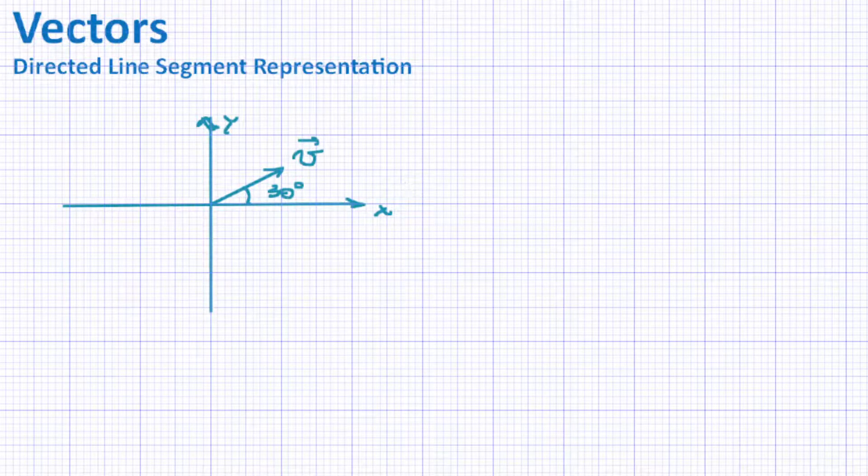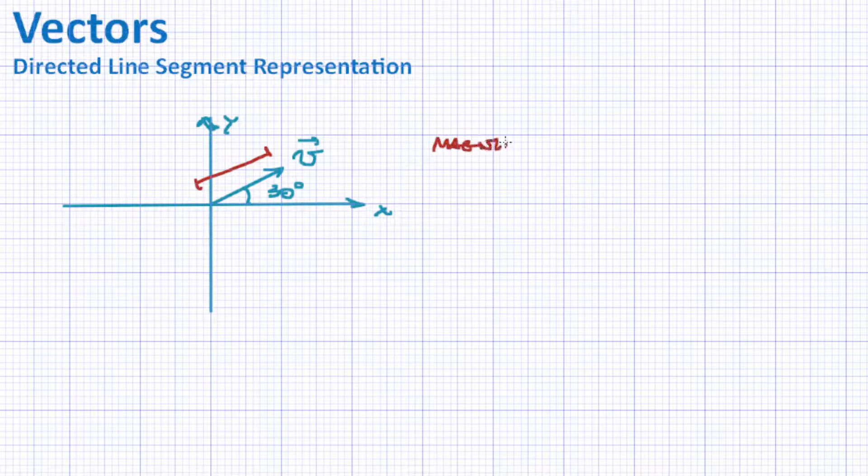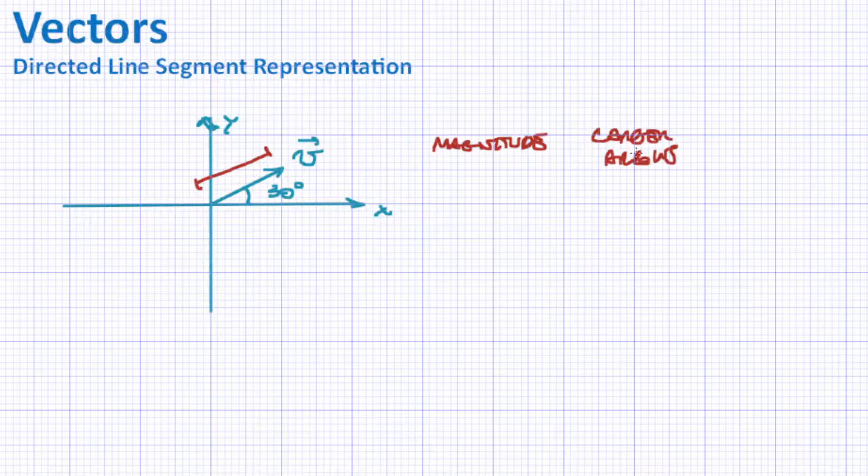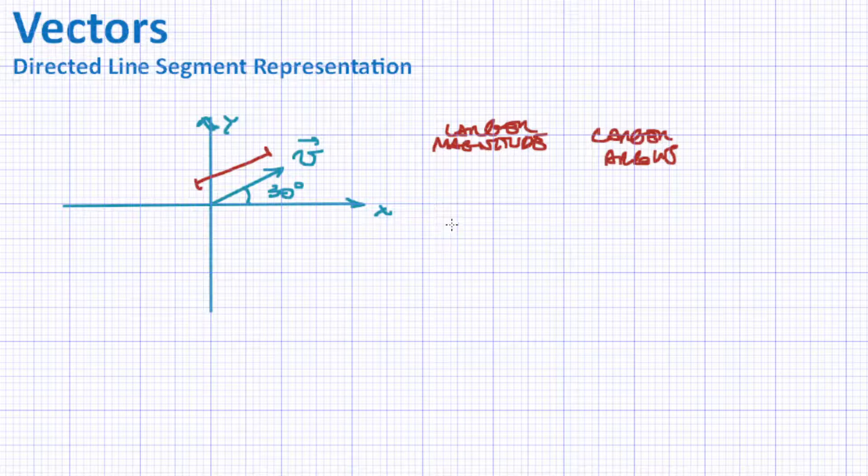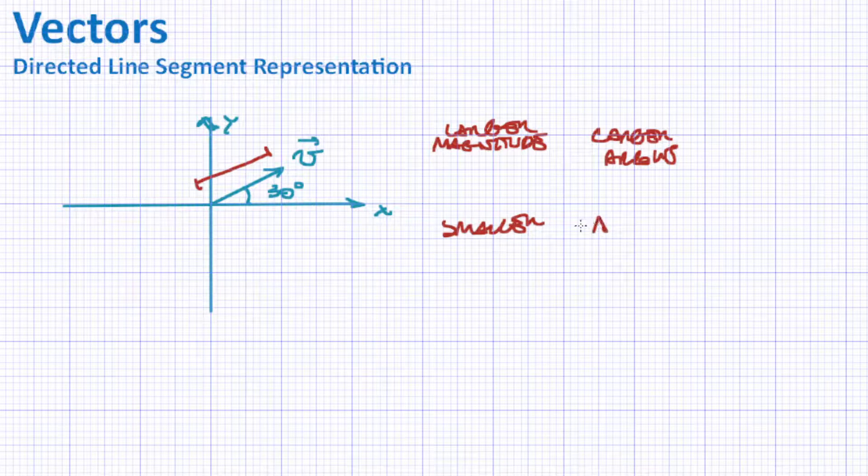Something important to notice is that the length of this vector, so how long it is, is proportional to its magnitude. So longer arrows, larger arrows, also means larger magnitudes. And obviously, smaller arrows also smaller magnitudes.